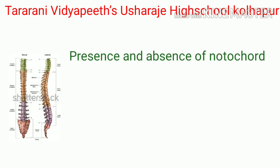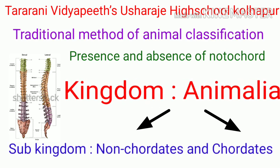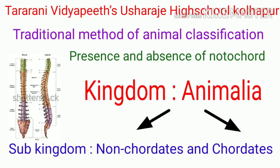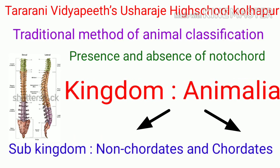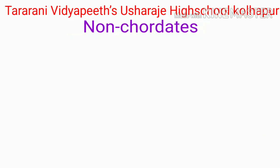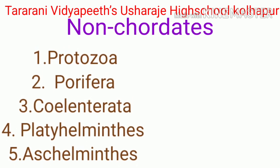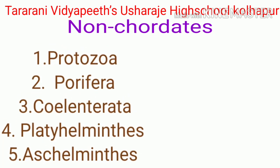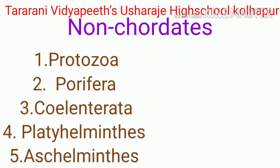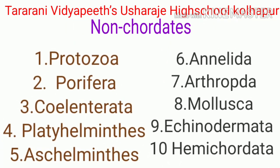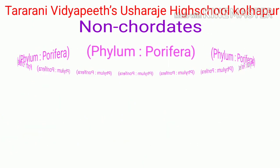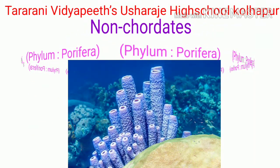The traditional method of animal classification depends upon the presence or absence of the notochord, dividing the animal kingdom into two groups: non-chordates and chordates. The sub-kingdom non-chordates is classified into ten phyla: Protozoa, Porifera, Coelenterata, Cnidaria, Platyhelminthes, Aschelminthes, Annelida, Arthropoda, Mollusca, Echinodermata, and Hemichordata.